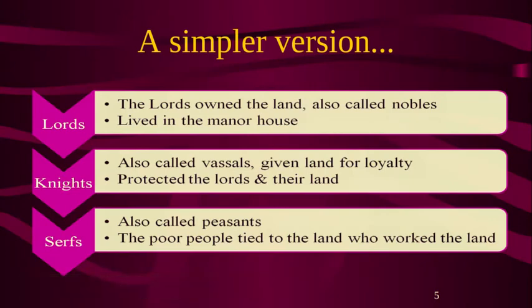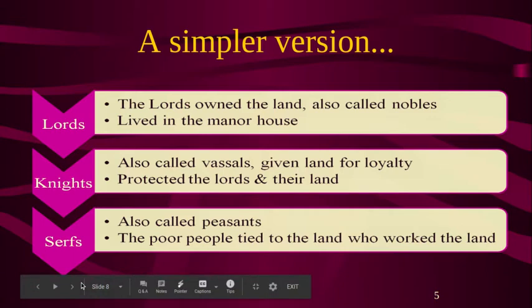A simpler way to think about feudalism in Europe: the lords owned the land and lived in a manor house or castle. The knights or vassals were given land for loyalty and protected the lords and their land — much like the samurai, but a bit stronger. At the bottom level was the peasantry or the serfs — poor people tied to the land. In this time, most people never traveled more than two miles from their house their entire lives.